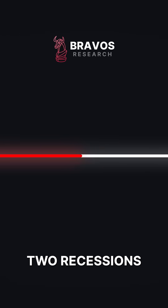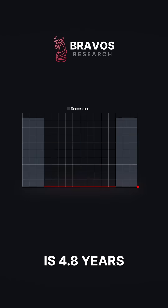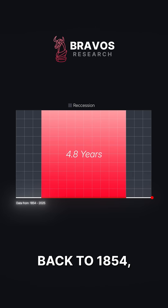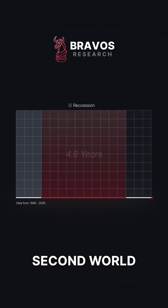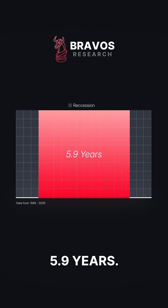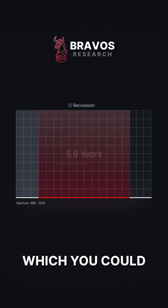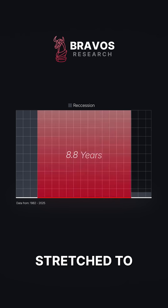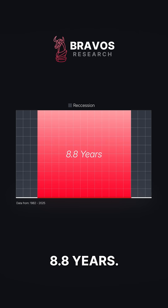Although the average time between two recessions is 4.8 years using data going back to 1854, if we only use data after the Second World War, the average time between two recessions is actually 5.9 years. And if we use data starting from 1982, which you could say was a more comparable economy to the one we have today, that number gets stretched to 8.8 years.